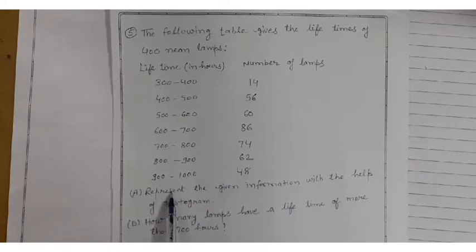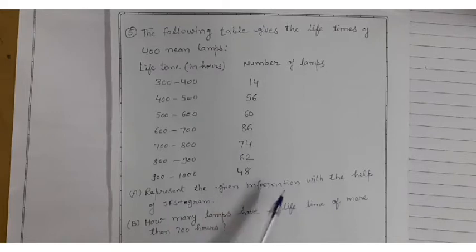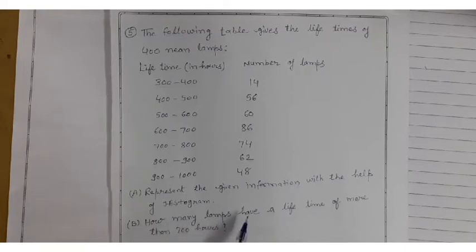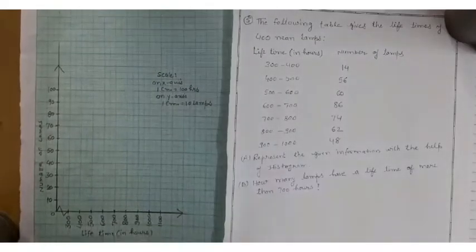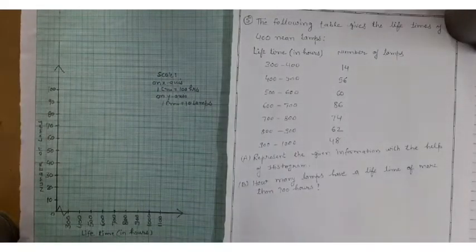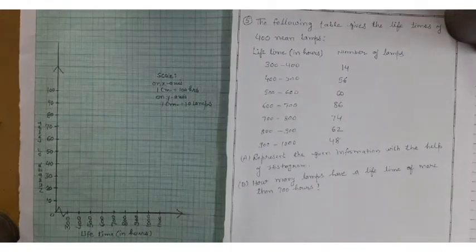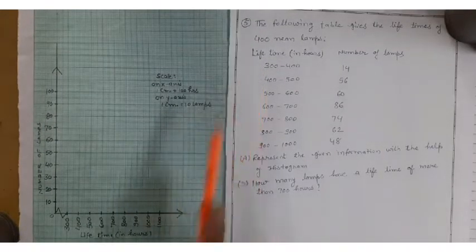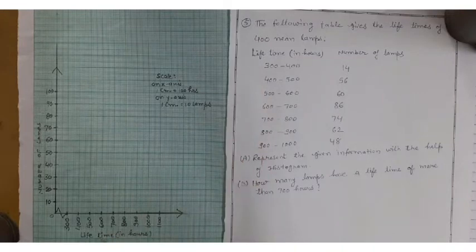You have to represent the given information with the help of a histogram. Second thing, how many lamps have a lifetime of more than 700 hours? This also you have to find out. According to the question, you have to make a graph with appropriate scale. Here is given lifetime in hours, so you have to take on x-axis lifetime in hours.